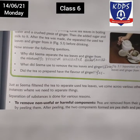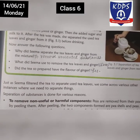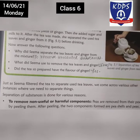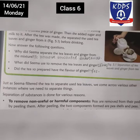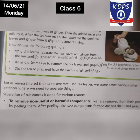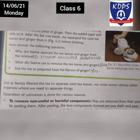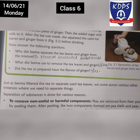Just as Seema filtered the tea to separate used tea leaves, we come across various other instances where we need to separate things. From this process, we understood that when making tea, we need to remove tea leaves and ginger as unwanted substances — we want only the tea.